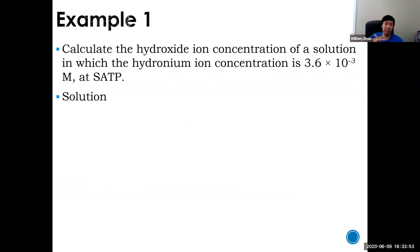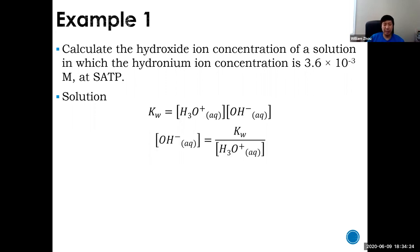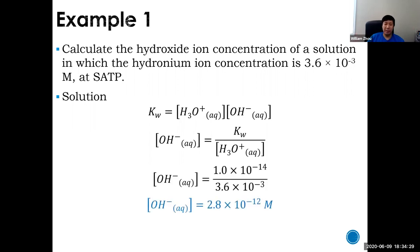Example one: calculate the hydroxide concentration of a solution in which the hydronium ion is 3.6×10⁻³ mol/L at SATP. You have the formula — Kw is the product of those two concentrations. You know Kw; it's given as a constant. You know the concentration of hydronium from the question. Algebraically isolate for OH⁻, plug in your numbers, and you get 2.8×10⁻¹² mol/L.